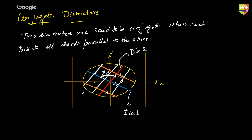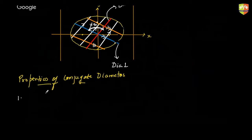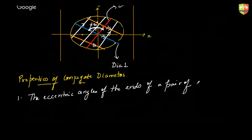Let us take some properties with respect to conjugate diameters. The first property: the eccentric angle of the ends of a pair of conjugate diameters in an ellipse differ by a right angle — that is, they differ by 90 degrees.